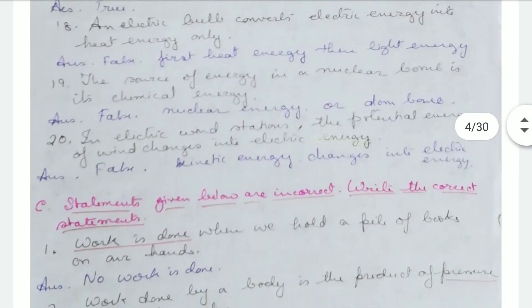The source of energy in a nuclear bomb is its chemical energy — false. The source of energy in a nuclear bomb is nuclear energy. Alternatively, chemical energy is the source in the case of an atom bomb, not a nuclear bomb.